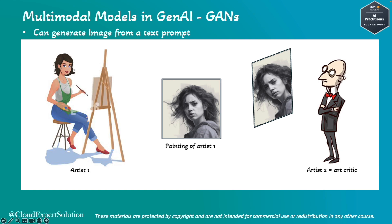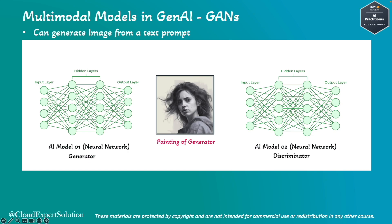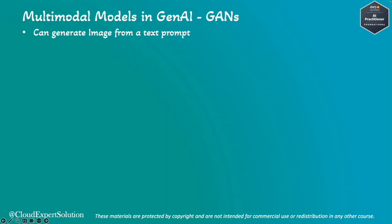In this painting example, if you replace the human artist with AI or neural network models, then this working principle will mimic how a Generative Adversarial Network model, or GAN, works. These models have the capability to perform a variety of complex tasks.